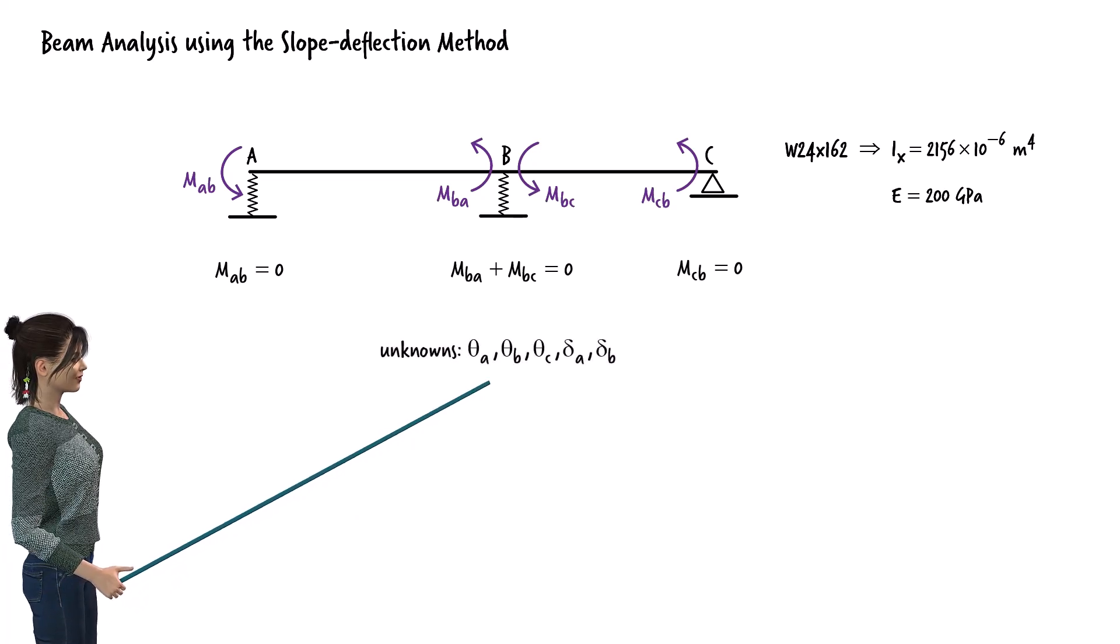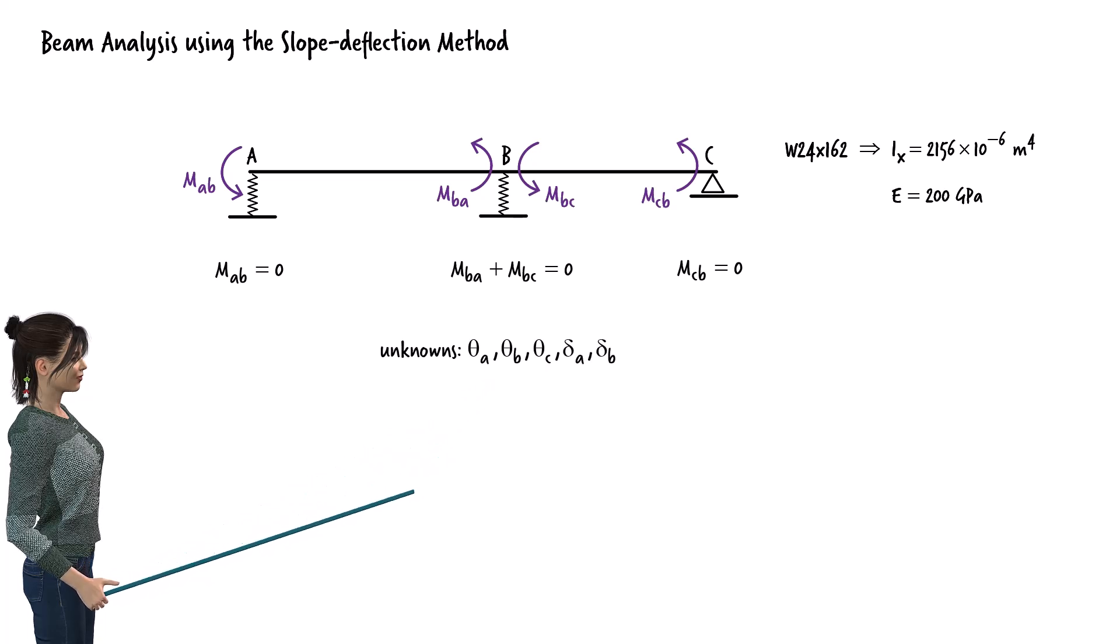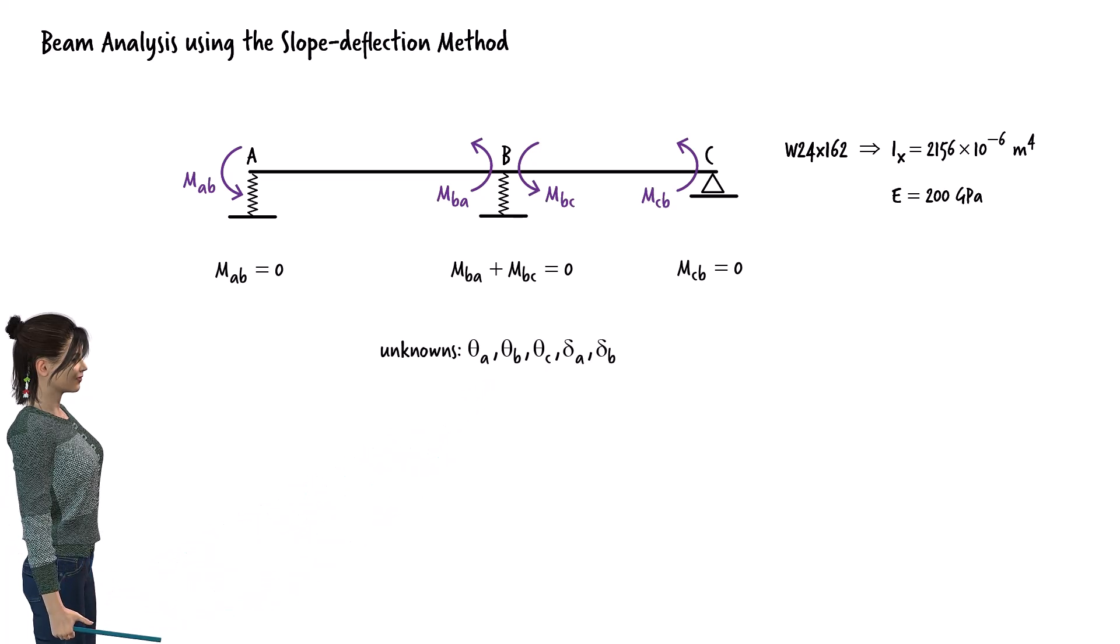We have five unknowns to determine. To solve for these unknowns, we need a total of five equilibrium equations. This means we must establish two additional equations.